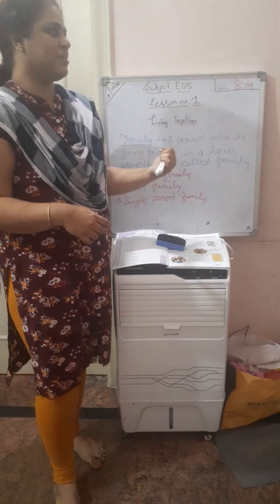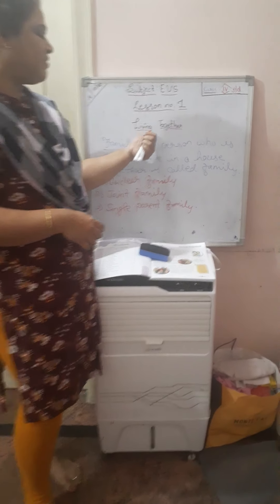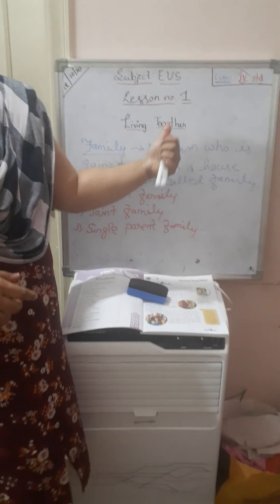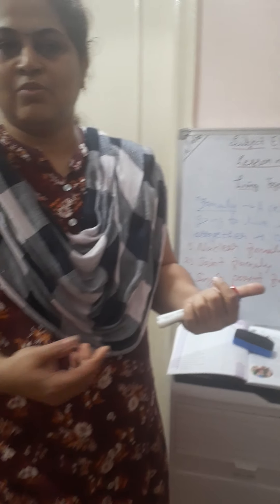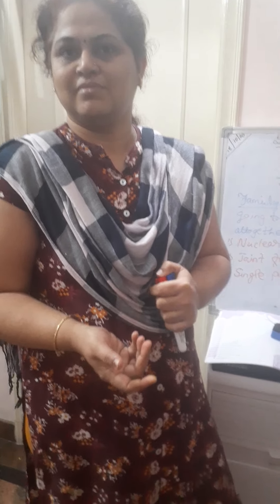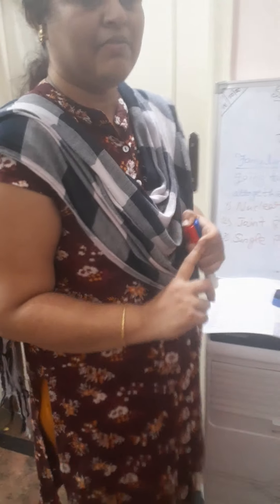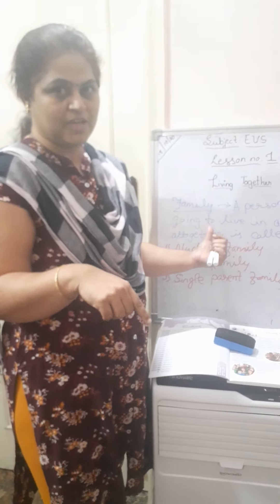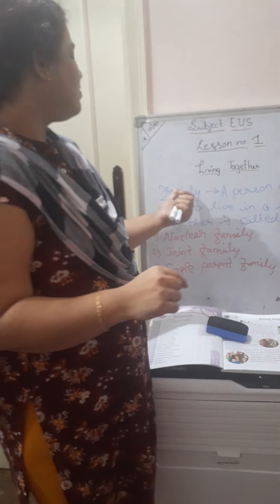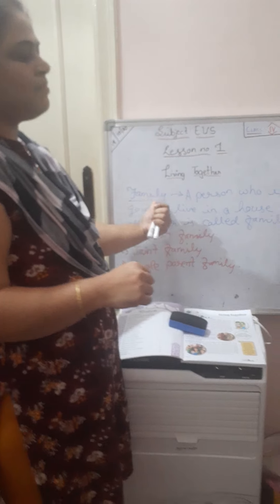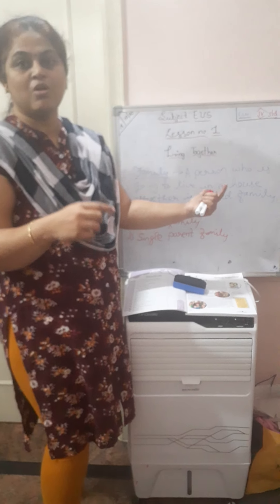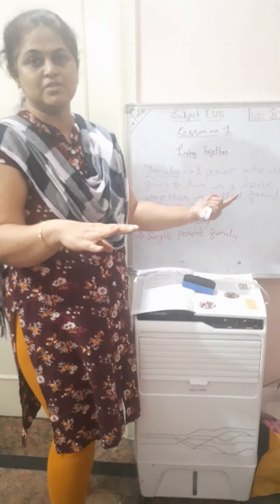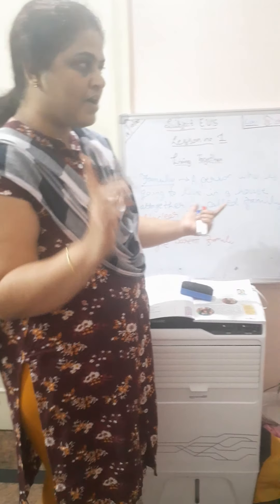So let's move to the subject. Lesson number 1, that is living together. So what is living together here? Who will live here? Family persons are going to live together. Where they are going to live? They are going to live in a home. So next, what is family then? A person who is going to live in a home, all together persons, that is called a family.